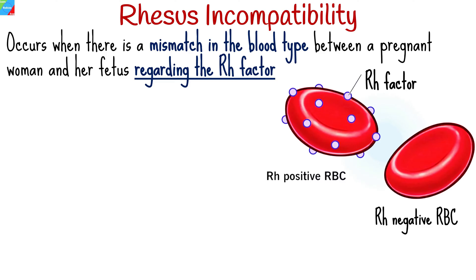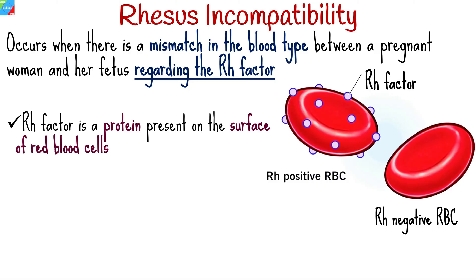Rhesus incompatibility, also known as Rh incompatibility or rhesus disease, is a medical condition that occurs when there is a mismatch in the blood type between a pregnant woman and her fetus regarding the Rh factor. The rhesus factor is a protein present on the surface of red blood cells. Individuals who have this protein are termed Rh positive, while those lacking it are Rh negative.